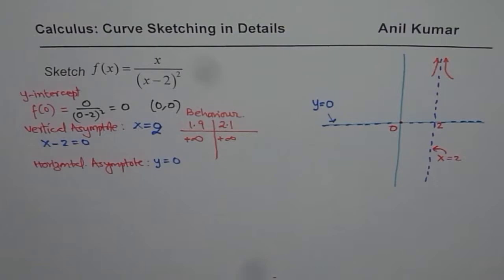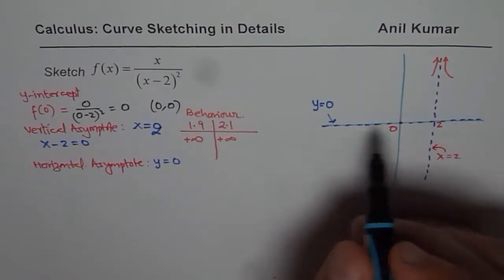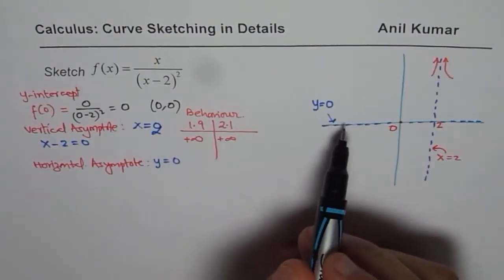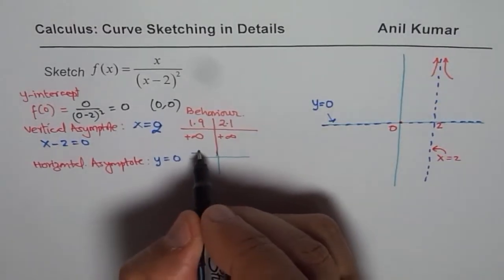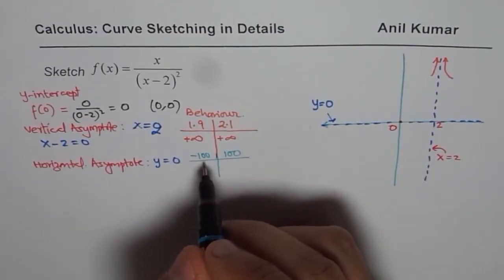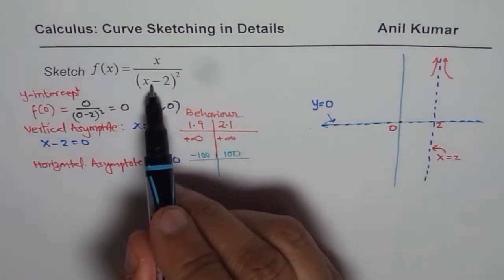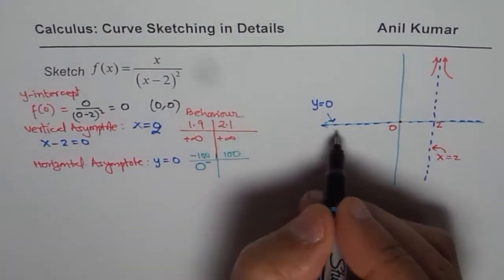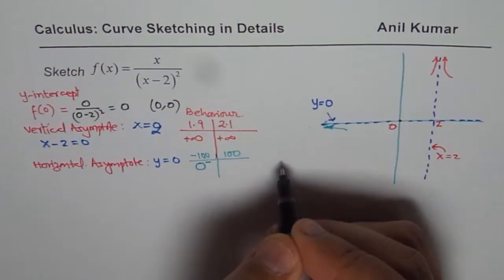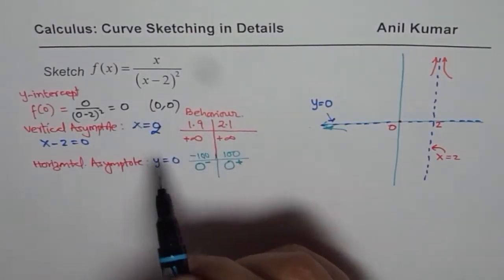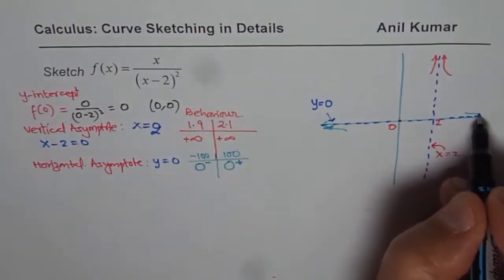We do the same for the horizontal asymptote. Substituting x = -100: the denominator is positive but the numerator is negative, so the function approaches 0 from the negative side. Substituting x = 100: the numerator is positive and denominator is always positive, so the function approaches 0 from the positive side. So the end behavior approaches the horizontal asymptote y = 0 from below on the left and from above on the right.